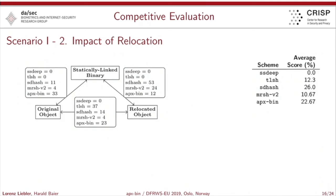In the case of impact of relocation, the picture slightly changes. We have statically linked binaries, relocated objects, and original objects, and we can compare each with each other. The scores differ quite heavily, and APXPIN also yields different scores and has different performance for different use cases. Looking at the average score values on the right, SDHash showed very solid results, APXPIN performs not badly, and TLSH also performs very well but has to struggle with some small files.